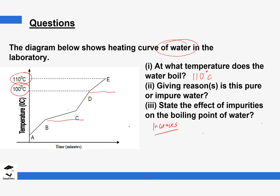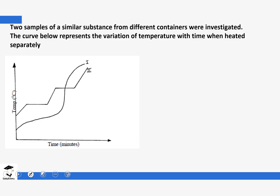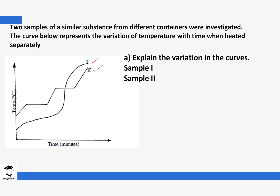Let's look at one more question. Two samples of a similar substance from different containers were investigated. The curve below represents the variation of temperature with time when heated separately. We can see curve one and curve two and their differences. The first question is to explain the variation in the curves. When you look at sample one, you notice that it does not have any sharp boiling point or melting point.